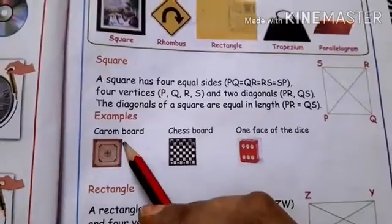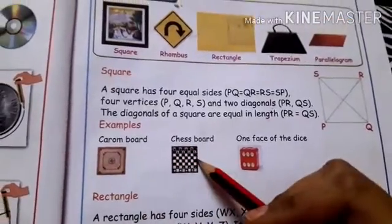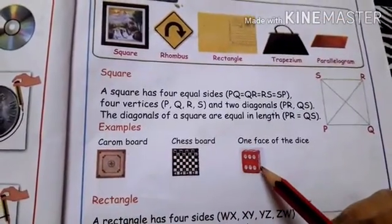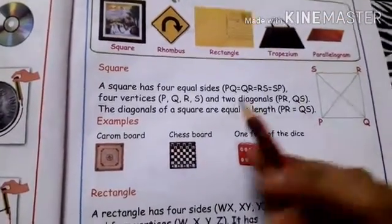Examples of a square are: a carrom board, a chess board, and one face of a dice.